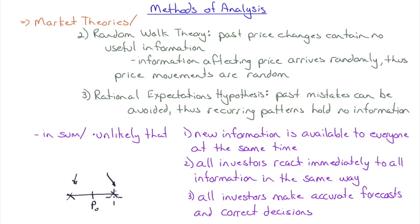An efficient market doesn't mean a correct market — it just means there's no bias toward always being overvalued or undervalued. So even accepting these statements, we can conclude that while markets may be efficient, that does not mean prices are correct. Prices can be incorrect even though on average they are efficient, and individual securities can be mispriced.